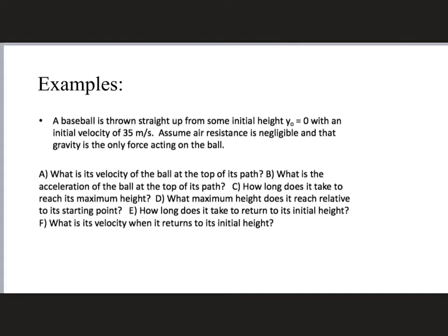That means the acceleration due to gravity is going to be little g. If I draw a coordinate system in the usual way, this would be my x-axis and this would be my y-axis, and little g is going to be pointing down — in the negative y-hat direction. The ball is being shot upwards and has an initial velocity v-naught equal to 35 meters per second. My initial position is at the origin of my coordinate system.